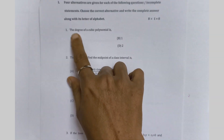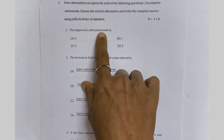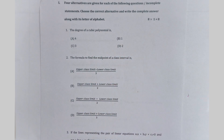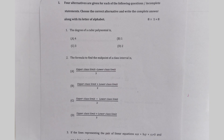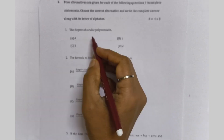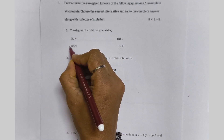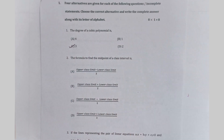First, multiple choice question: the degree of the cubic polynomial. Cubic polynomial means the highest degree is 3. Quadratic means 2. Linear means highest degree is 1. Here he is asking cubic polynomial, so cubic polynomial means highest degree is 3.